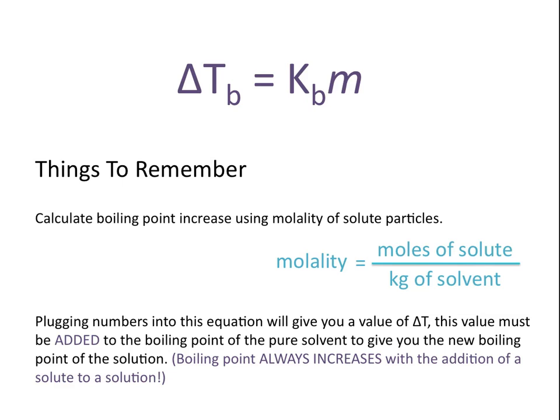The boiling point always increases with the addition of a solute to a solution, and we're always going to add the value we calculate for delta T to the boiling point of the pure solvent.